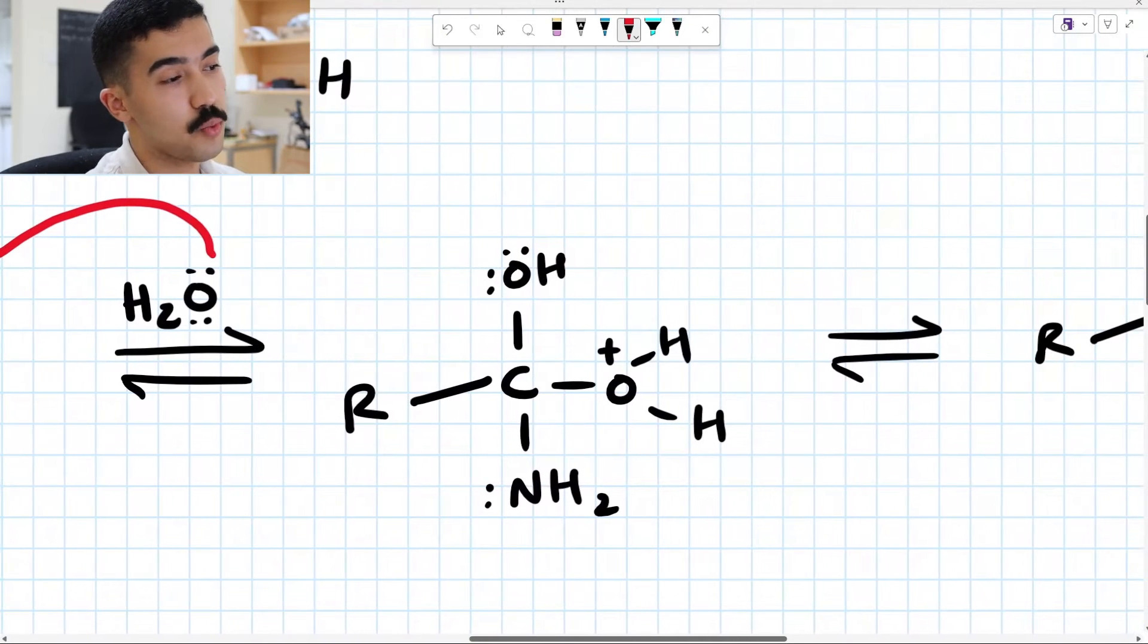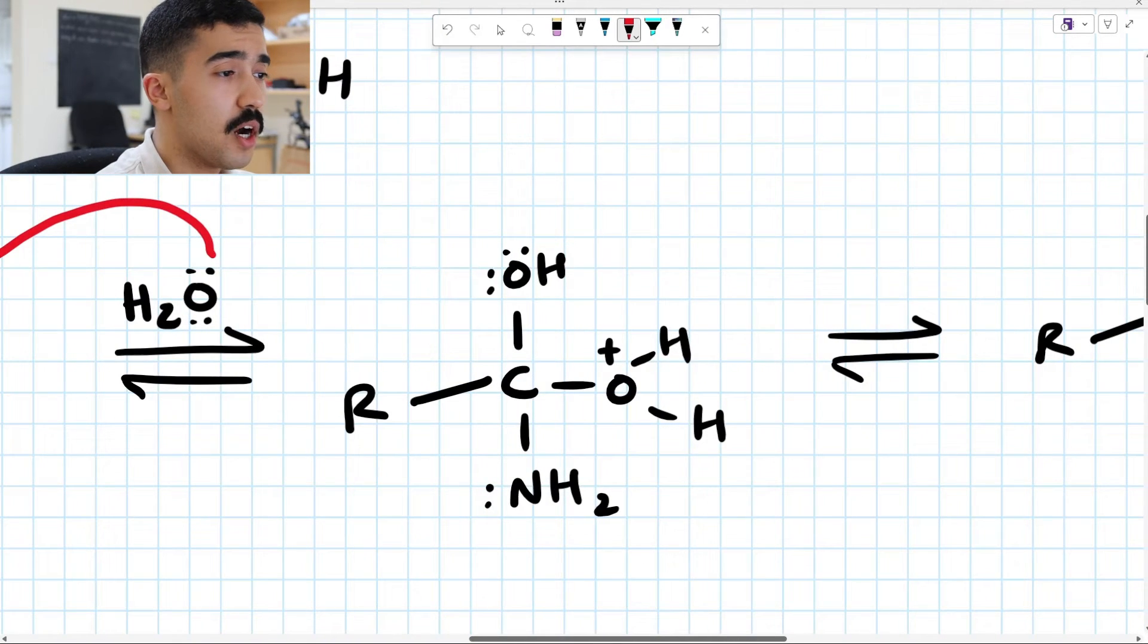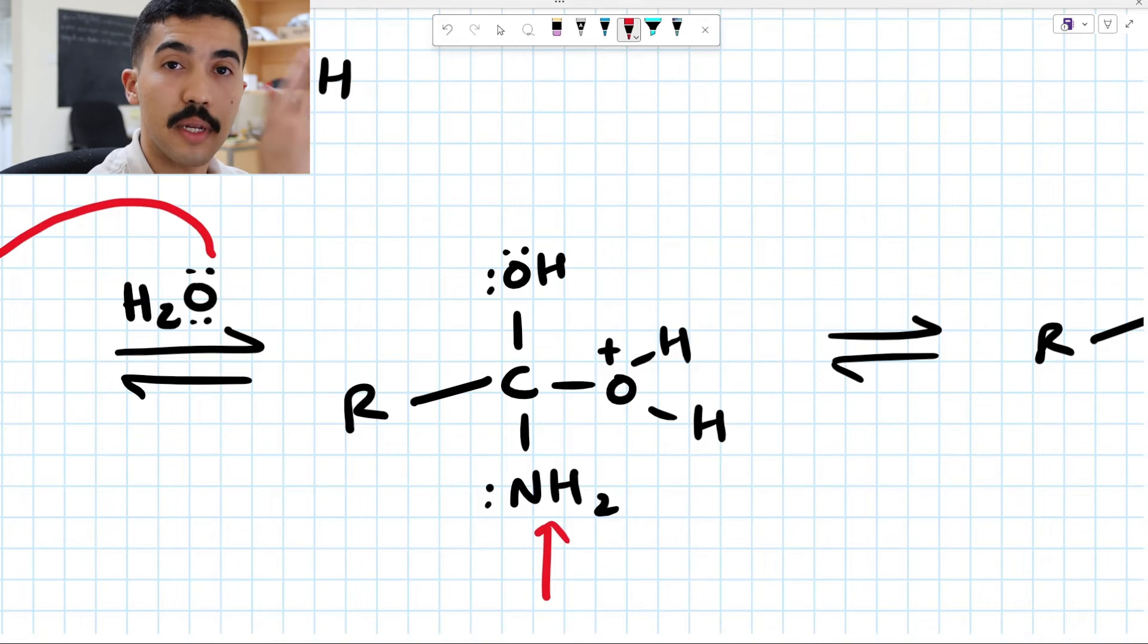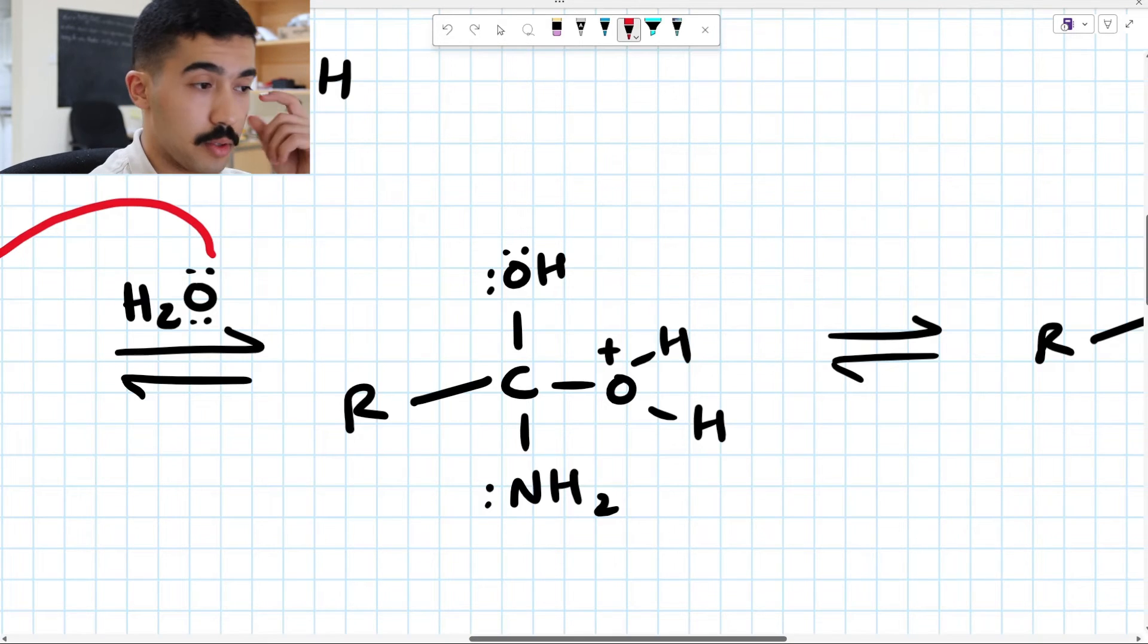When that happens, we form this where we have our OH group, we have our newly added OH2 plus group. And essentially what's going to happen is we now want to kick out the NH2 group. That's the ultimate goal because we're going from a nitrile to a carboxylic acid. And carboxylic acids are just our C double bond O OH.